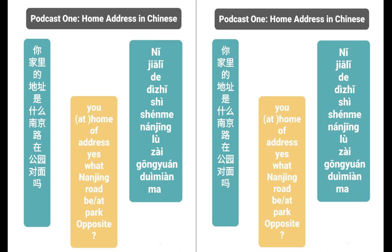So 一百三十五号 — number 135. 号 is the fourth tone. If it was 145: 一百四十五号. One hundred fifty-five: 一百五十五号. Actually, 我家里的地址是三百二十九号 — Jenny's real home address.